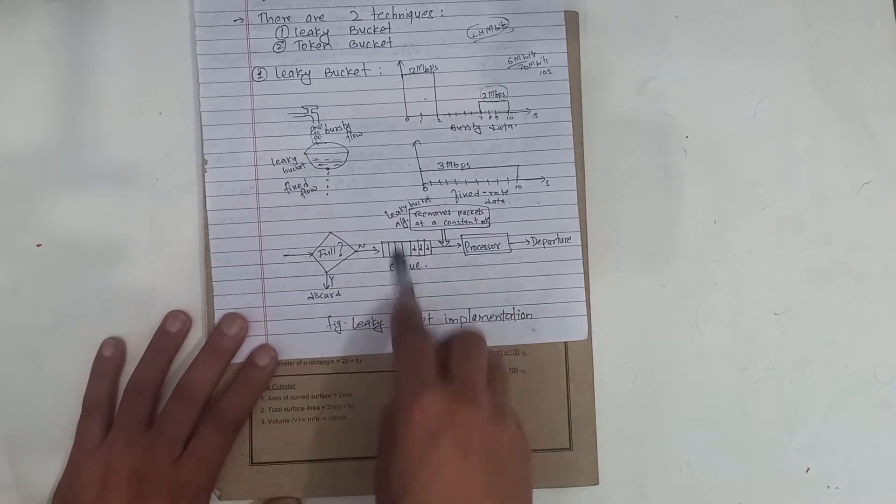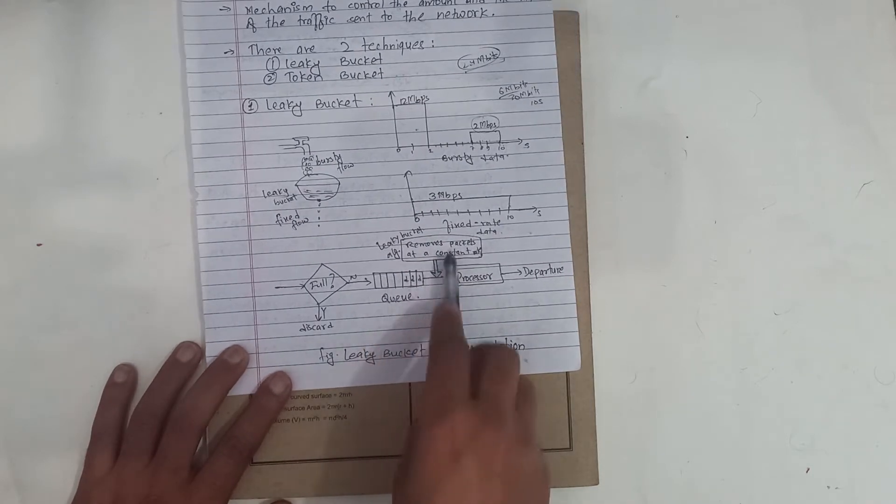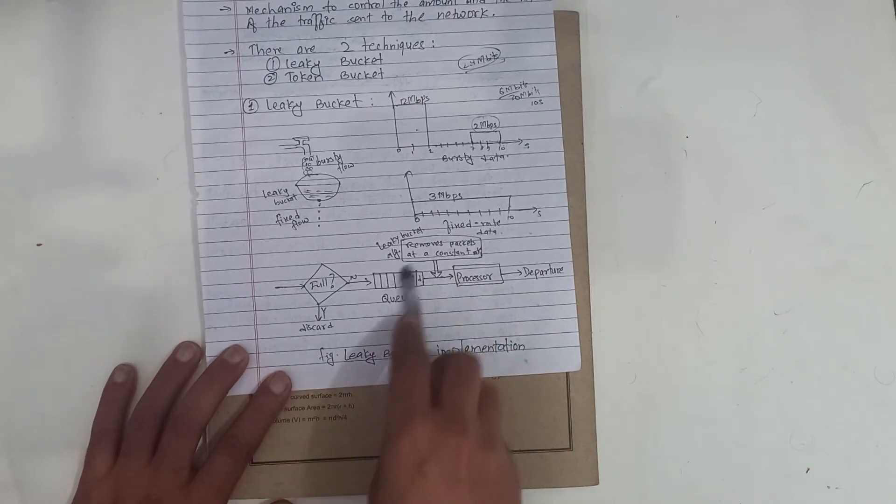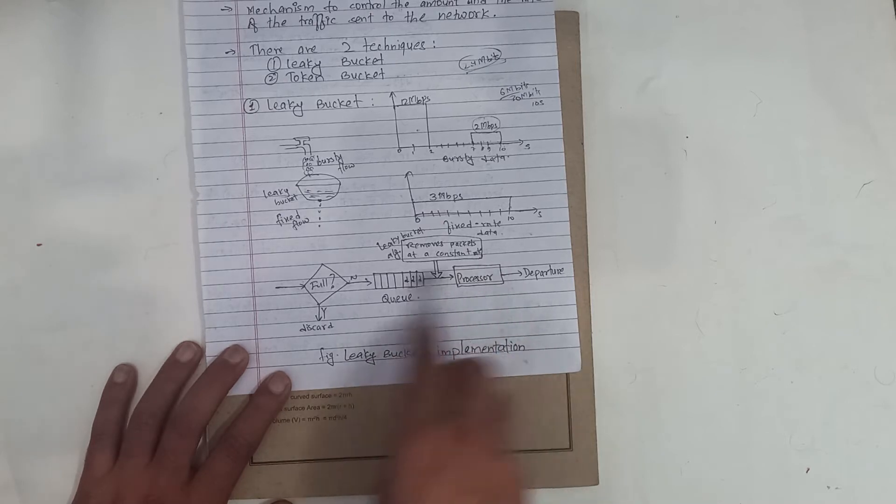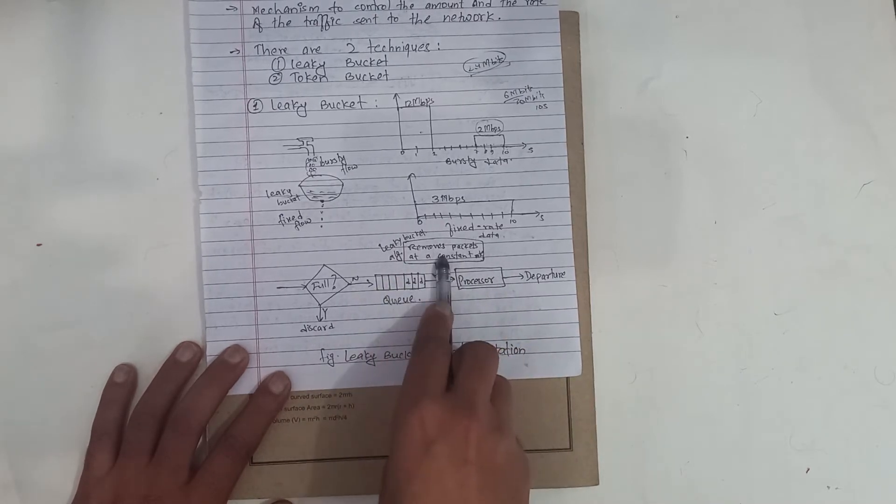We use a queue. In the queue, we use the leaky bucket algorithm. The queue removes packets at a constant rate. This is the leaky bucket algorithm.